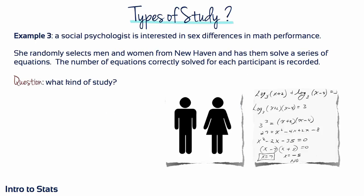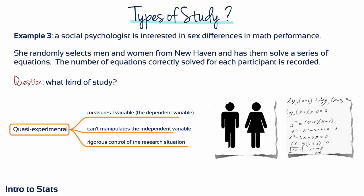Example 3: A social psychologist is interested in sex differences in math performance. She randomly selects men and women from New Haven and has them solve a series of equations. The number of equations correctly solved for each participant is recorded. The psychologist is measuring one variable — equations solved correctly — but she can't manipulate the pre-existing sex of the subjects. This is a quasi-experimental study.